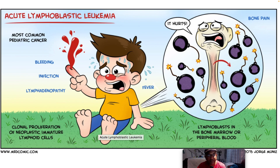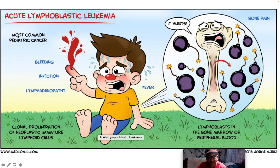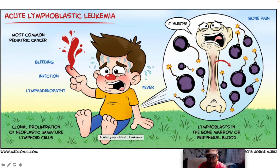Acute lymphoblastic leukemia is the most common pediatric cancer. A young child presenting with fever of unknown cause — always keep ALL in the differential. It classically presents with bleeding, infection, lymphadenopathy, and fever. It represents a clonal proliferation of neoplastic immature lymphoid cells. When you have lymphoblasts in the bone marrow or peripheral blood, that's your tip-off — on smear you will see these lymphoblasts. It also causes bone pain.